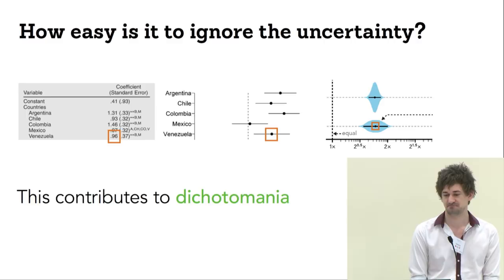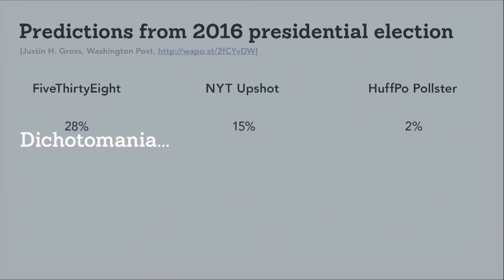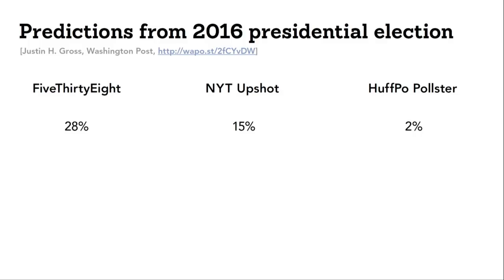We talked a little bit about elections yesterday, and one of my favorite examples of dichotomania comes from elections. These are probabilistic predictions of Trump's chance of winning the 2016 election from three different poll aggregators: 538 gave him a 28% chance, the Upshot gave him a 15% chance, and Huffington Post gave him a 2% chance. A lot of people got angry and surprised. Part of that is that you see 28% and you're quite content to round it down to zero.